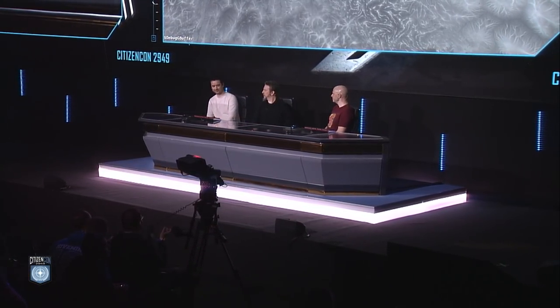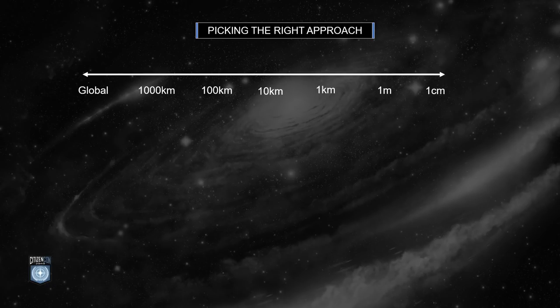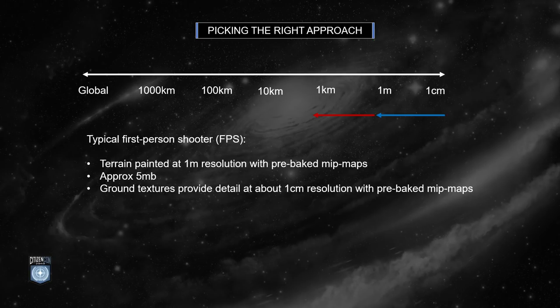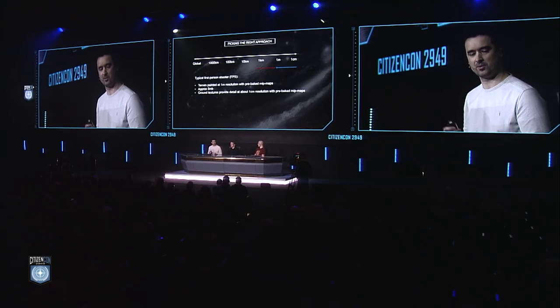To talk about how we make use of this climate data, first I want to take a step back and talk about the different approaches to how you can build a planet. A typical first-person shooter would typically be made of maybe two layers of textures — small ground textures representing millimeter accuracy details up to a meter or two, and then a terrain layer at roughly one-meter resolution covering the entire play space of say a kilometer. That would typically account for about five megabytes of memory, which is nice and cheap. A large open-world game stretching 10 by 10 kilometers would need about 100 megabytes using the same approach — still quite sensible for current-gen hardware.